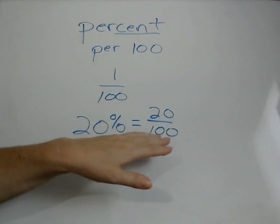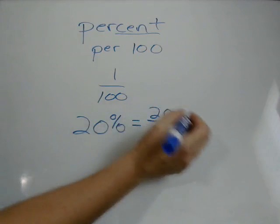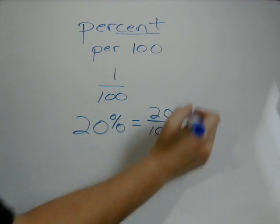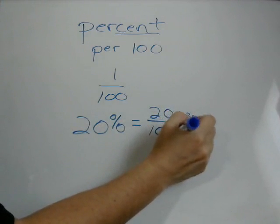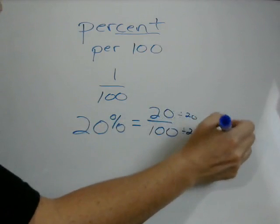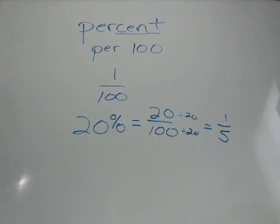Now you know that this isn't in lowest terms, so if you don't know how to put this in lowest terms, watch the video on fractions. But basically we're going to divide the numerator and the denominator by 20. And in lowest terms, this is one-fifth.